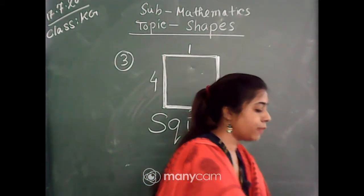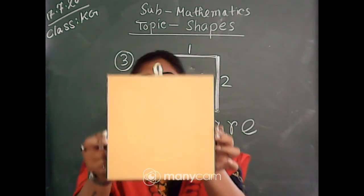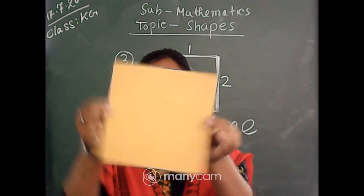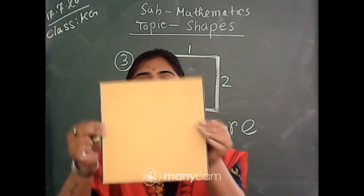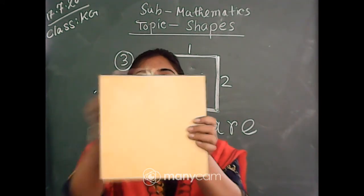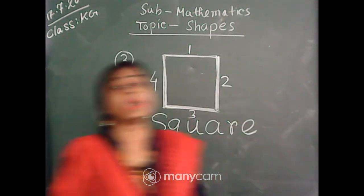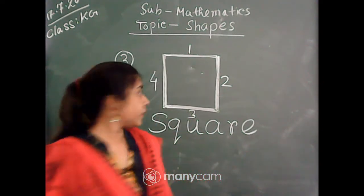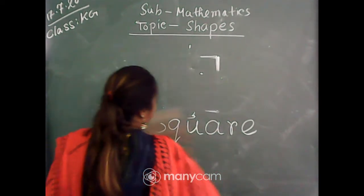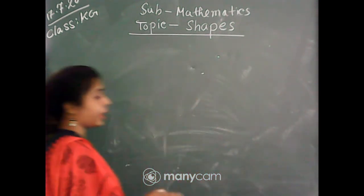I am going to show you — that is your square. It is the shape of square. Can you see? All the sides are equal in size: 1, 2, 3, and 4 — all the sides are equal in size. And the spelling is very important: S-Q-U-A-R-E. So it is our square. When you are drawing this square, you should remember all the sides are equal.